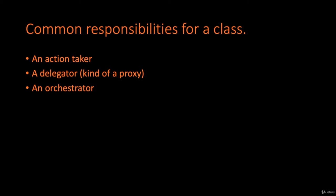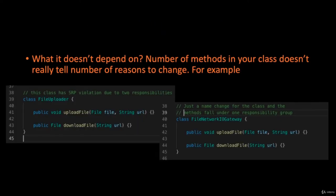Keep your class size in check so it doesn't become a god class doing everything. A class can be an action taker, a delegator, or an orchestrator. In our previous example, MyResponsibleClass is an orchestrator, while Dependency 1, 2, and 3 are action takers. A delegator is a class which acts as a proxy to another class. The responsibility of a class doesn't depend on the number of methods — if you observe closely, changing the class name can reduce the number of responsibilities to one.